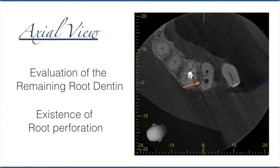Luckily, there was no root perforation. Another finding was that, looking closely next to the arrow mark, the remaining dentin thickness is very thin on the mesial wall. So when I make my attempt, I will take precautions not to remove any dentin from the mesial wall. Any dentin removal if needed will only be from the distal wall, or worst case the buccal wall.